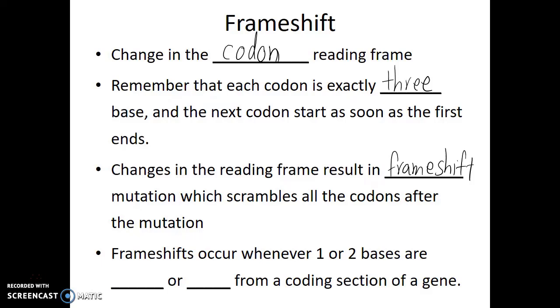Which scramble all the codons after that point of mutation. Frameshifts occur whenever one or two bases are added or lost from a coding section of a gene.